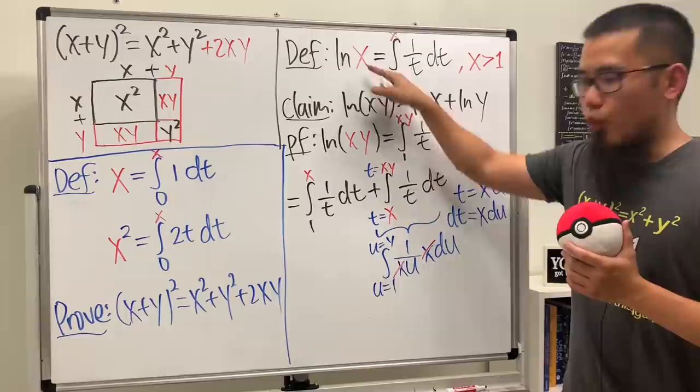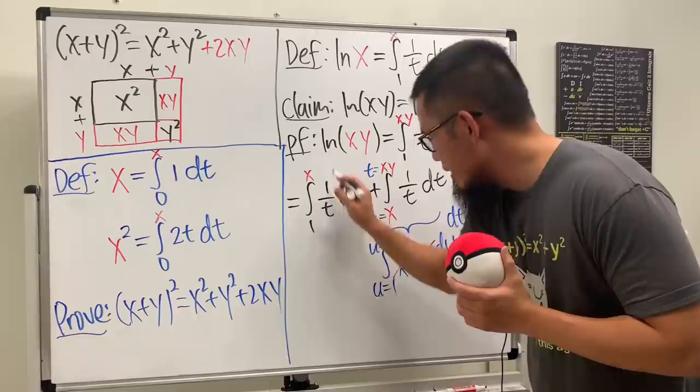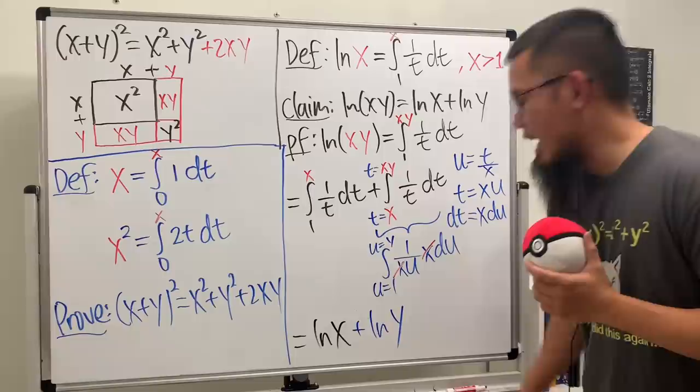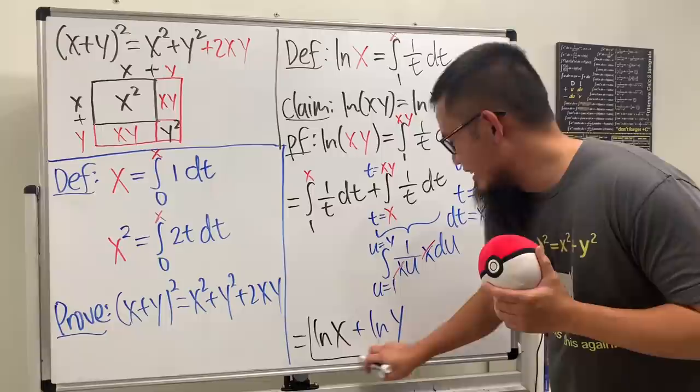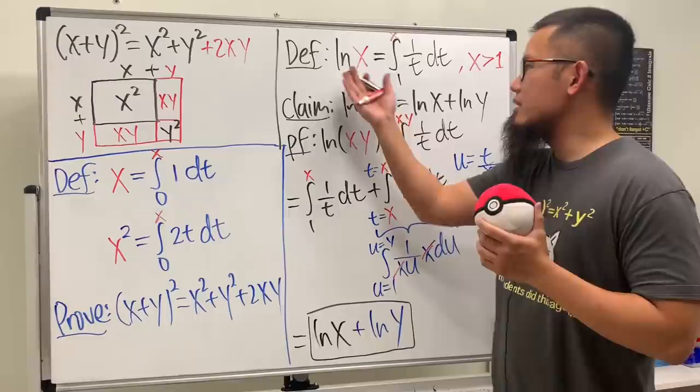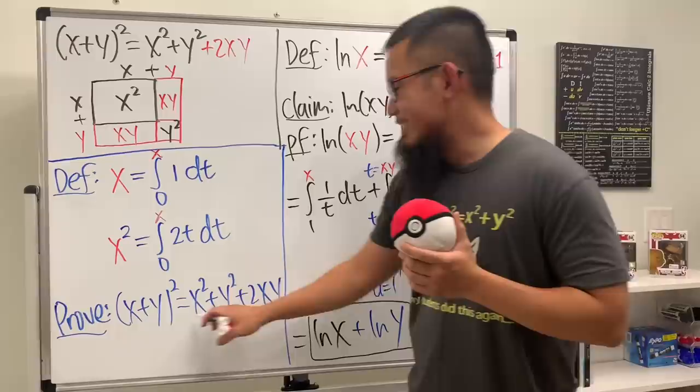And u is just the dummy variable. Doesn't matter. This is the same as that. But we just use y right here. So, we are done. Ladies and gentlemen. This right here gives us ln x. This right here gives us ln y. And do we need plus c? No. So, as you can see, this is how we can prove this log property by using this integral definition for the natural log.